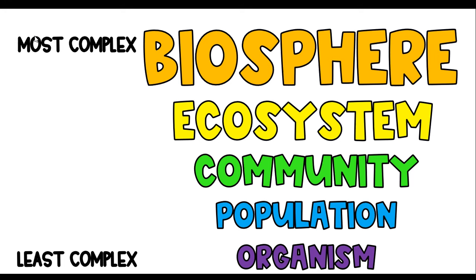I want to show you visually how we organize the five levels of environmental organization from least complex, starting with an organism, going up to population, then community, then ecosystem, and the biosphere as the most complex. Every level is complex, but one single frog is less complex than a thousand frogs in a rainforest, which is less complex than those frogs plus tigers, monkeys, and ferns. We then add the non-living things — water, sunlight, rocks, soil — to get the ecosystem. The biosphere is everywhere on planet Earth that life exists.